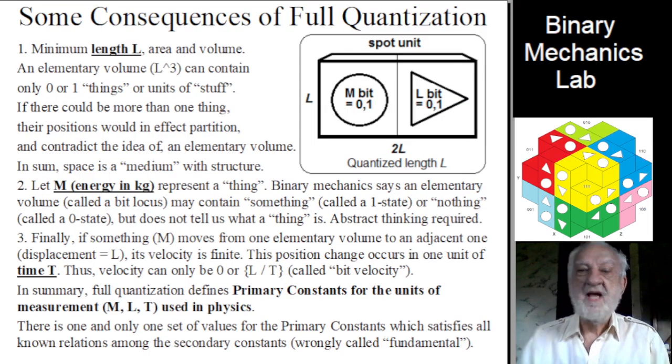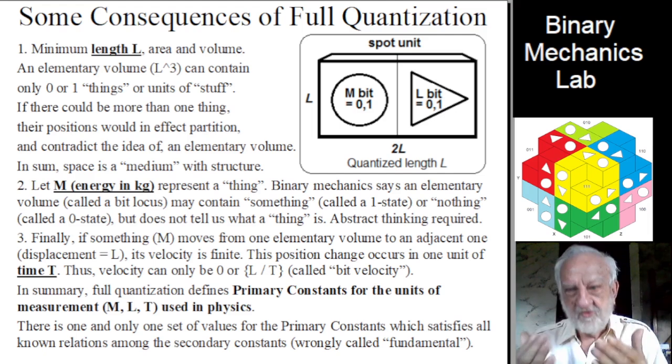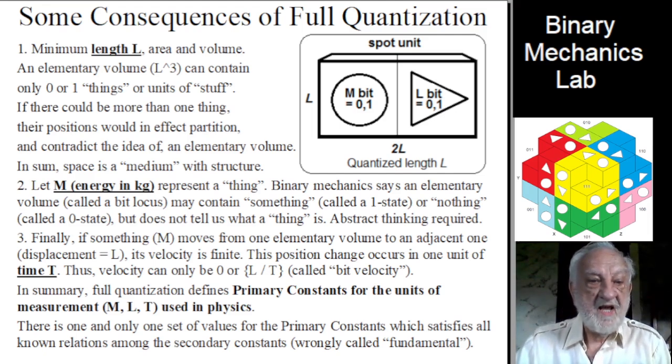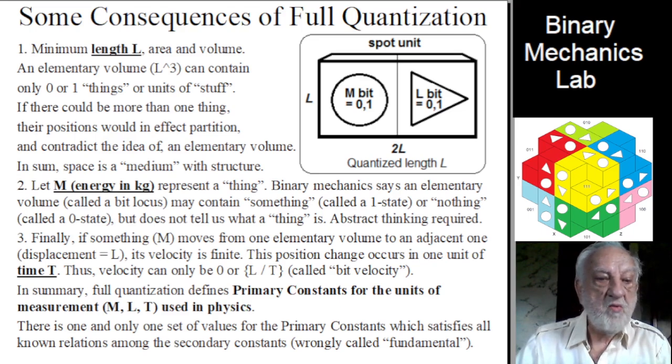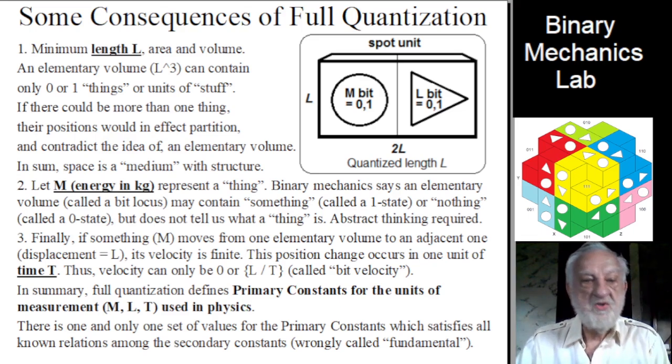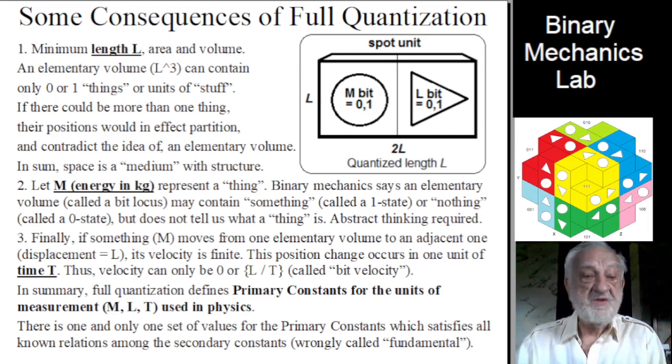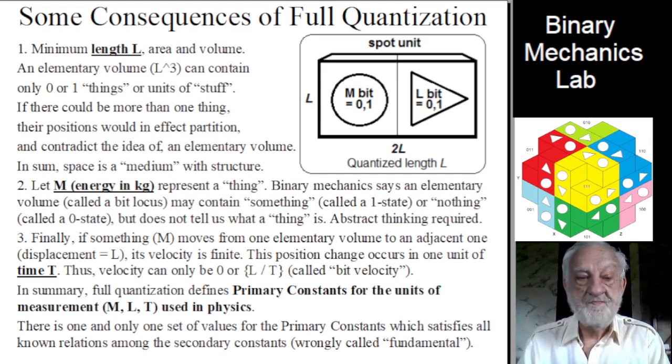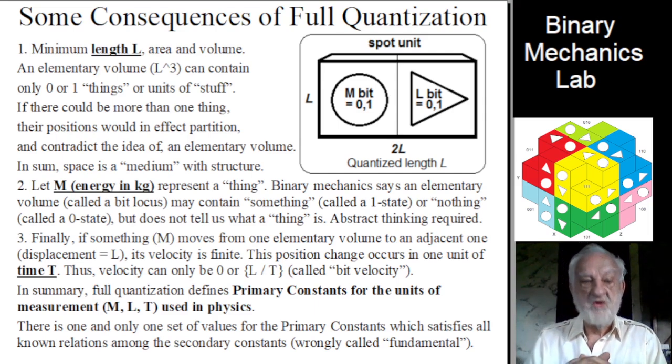Now let's look at some consequences of full quantization. First, minimum length L, area and volume. An elementary volume, L cubed, can contain only zero or one things or units of stuff. If there could be more than one thing, their position would, in effect, partition and contradict the idea of an elementary volume. In sum, space is a medium with structure.